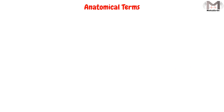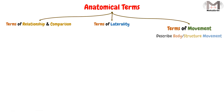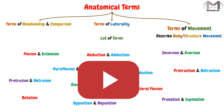As we know from the previous videos, anatomical terms are divided into 3 main types. We explained the first type, which is the terms of relationship and comparison. Then we explained the terms of laterality, and today we have the terms of movement, which describe body movement or a specific structure's movement. There are in fact a lot of terms, like flexion and extension, abduction and adduction, and rotation, and others, which we will explain in detail in the upcoming videos.